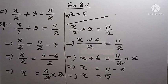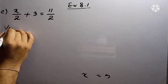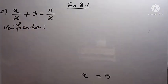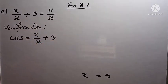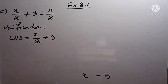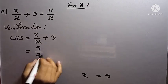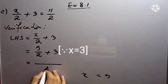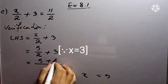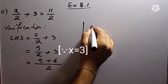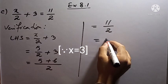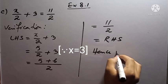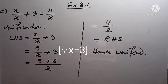Let us continue the verification. Verification: I find x on the left hand side. Left hand side equals x by 2 plus 3. The value of x is 5, so I write 5 by 2 plus 3. Taking LCM of 2 and 1, which is 2, we get 5 plus 6 over 2, which equals 11 divided by 2. On the right hand side we have 11 by 2. So left hand side equals right hand side, hence verified.